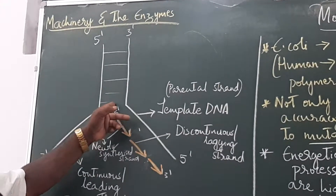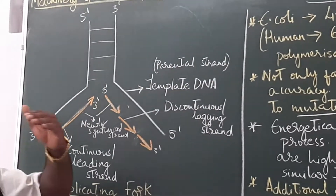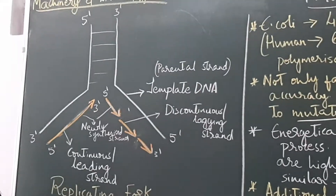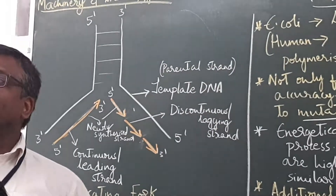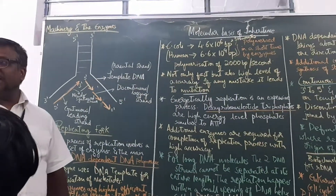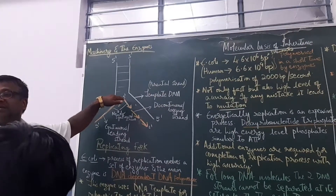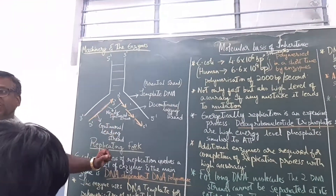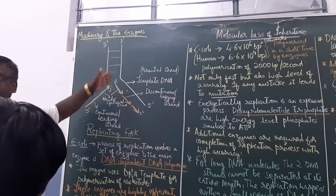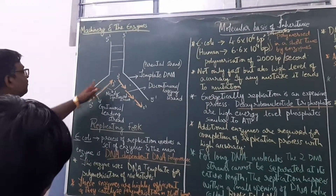At the origin of replication (ori site), the strands undergo unwinding by helicase enzyme, also called unwindase. This unwinding at the ori site forms what we call the replication fork, where the two strands act as template strands.